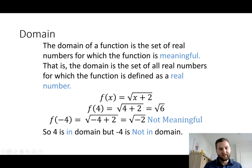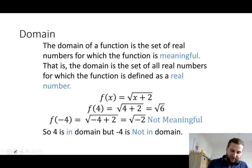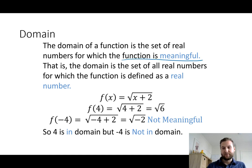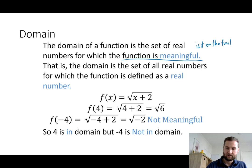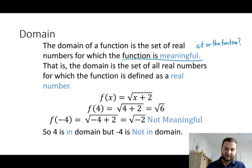The formal definition is: the set of real numbers for which the function is meaningful. This means — is the number on the function, does it exist on the function? If it doesn't exist, then it cannot be in the domain, and this will limit our sets in terms of what we say is part of the domain.